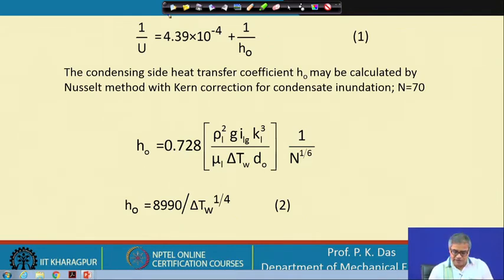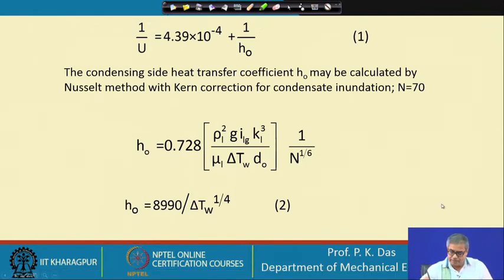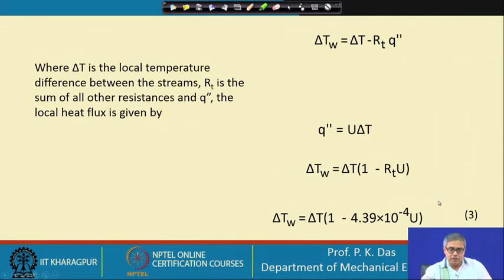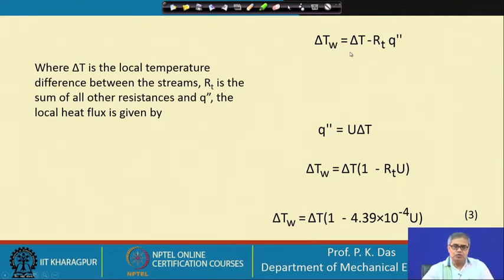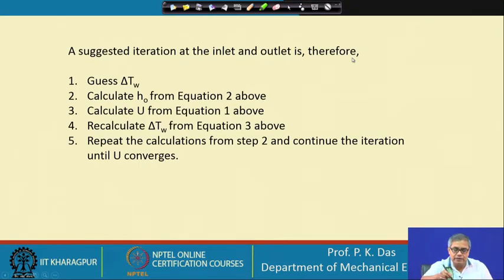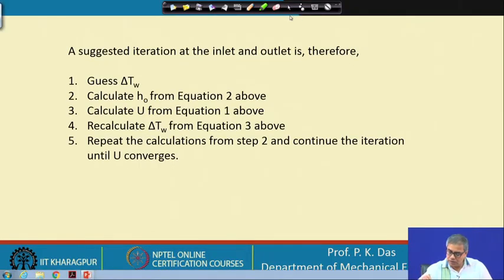Now, this is the current scenario. In the next slide we look at delta T_w as a function of heat flux. Delta T represents the total temperature difference between coolant water and steam — the local temperature difference between the two streams.